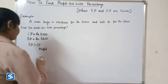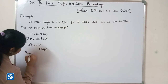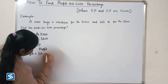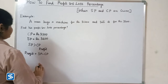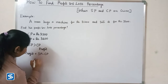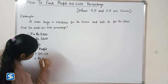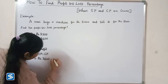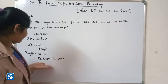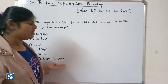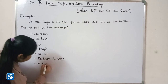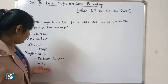So now let us find the profit. Profit is equal to selling price minus cost price. Here selling price is rupees 3600 and cost price is rupees 3200. So rupees 3600 minus rupees 3200 will be rupees 400. So profit is equal to rupees 400.